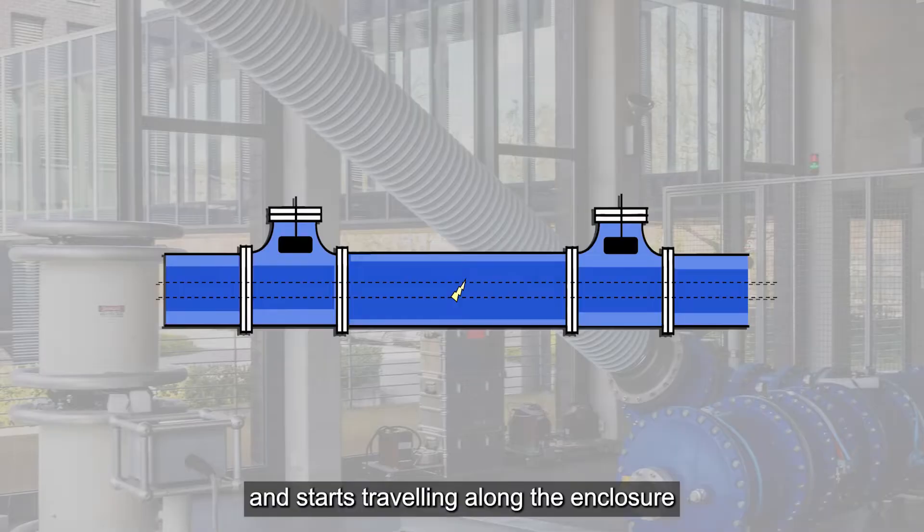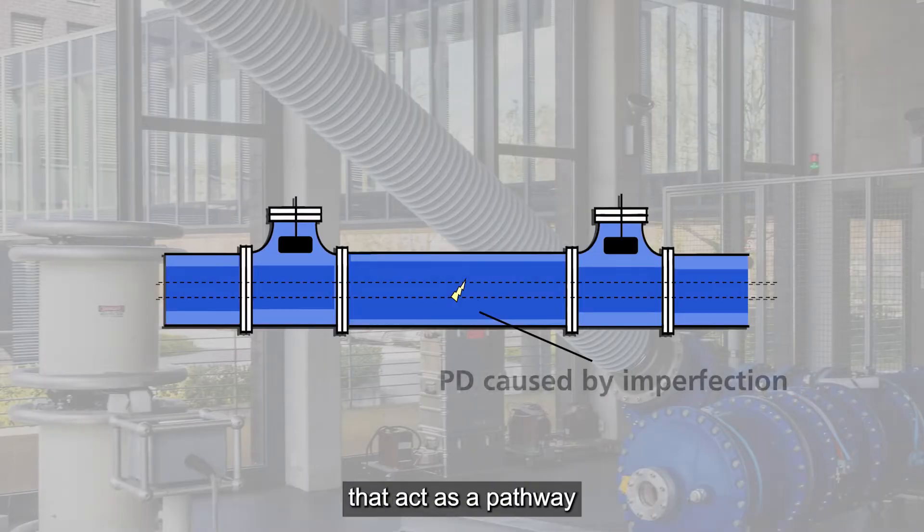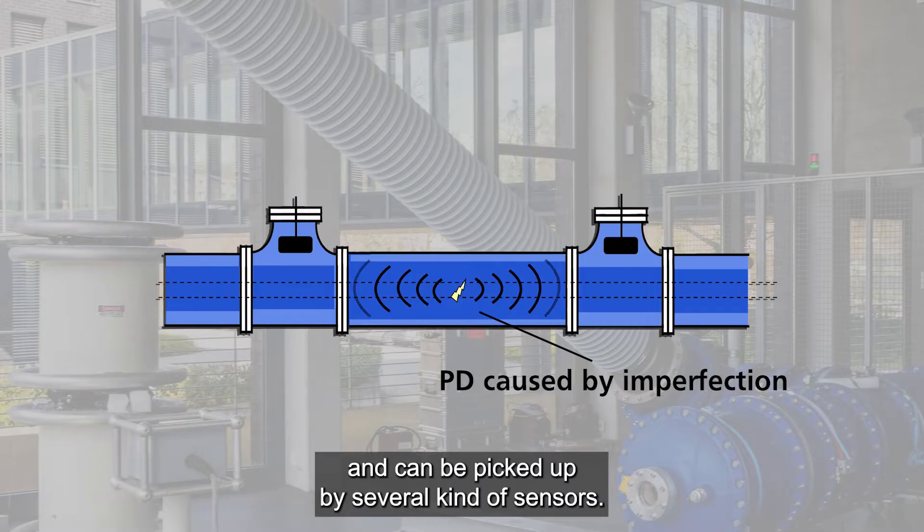When partial discharges occur, an electromagnetic wave is emitted and starts traveling along the enclosure that acts as a pathway and can be picked up by several kinds of sensors.